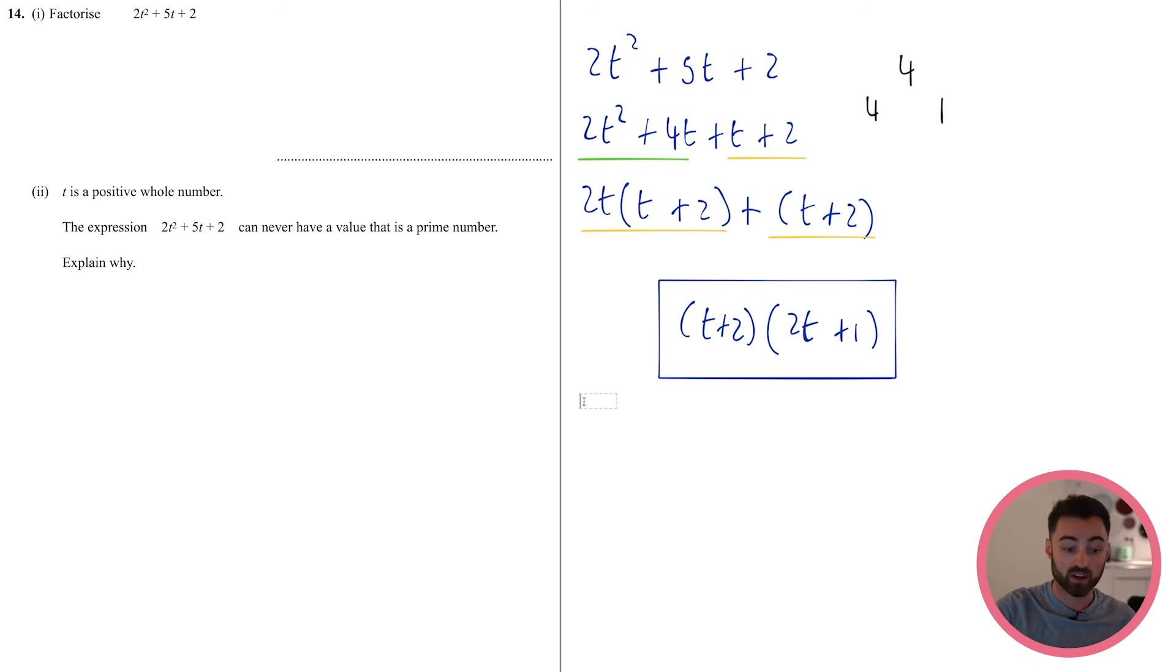We've factorized this algebraic expression here, we've broken it down into factors. The first factor is t + 2, the second is 2t + 1. Now t must be a positive integer, so 1, 2, 3, 4, 5, etc. What do we know about prime numbers and their factors? Well we know that for prime numbers, they are numbers for which the only factors are itself and 1. So for example, 3 is a prime number because the only factors are 3 and 1. 7 is a prime number because the only factors are 7 and 1. 9 is not because 3 is a factor of 9. So here's the thing, if something's a prime number, one of the factors has to be 1. So if this thing here was a prime number, one of these would have to be 1.